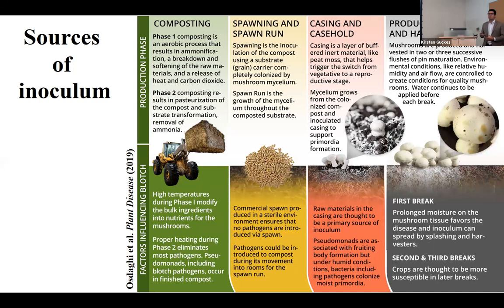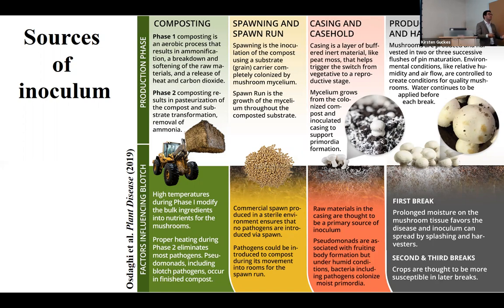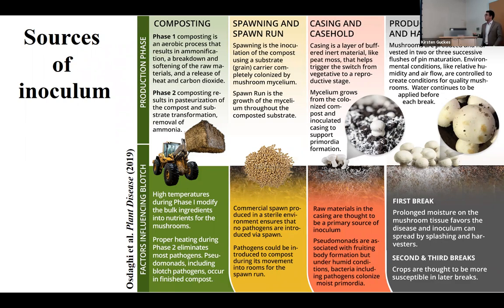If the compost is not sterilized properly, it can carry the pathogen to the farms. Another source of the pathogen is the spawn — analogous to seeds or seedlings. You want to make sure your spawn is healthy. Another source is the casing, or raw materials the grower adds to the compost, which can also carry the pathogen. Once inside the house, the microbe can move from a contaminated mushroom to a healthy one, spreading the disease.